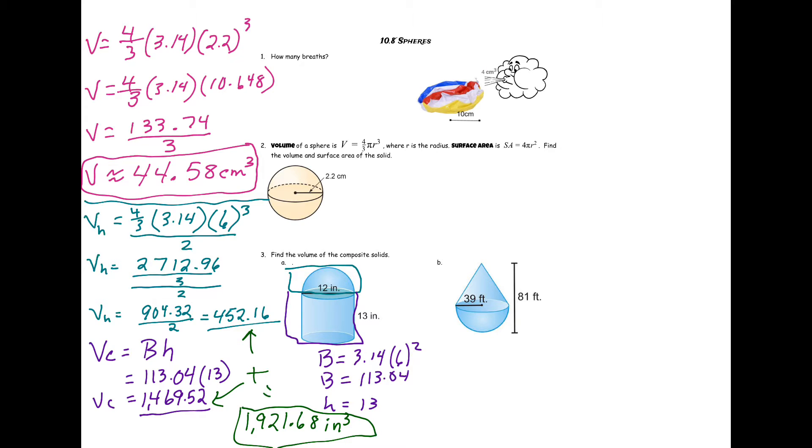All right, so let's finish up here with sphere and surface area. Once again, our formula for surface area right here, so 4 pi r squared.